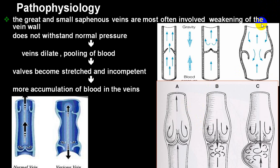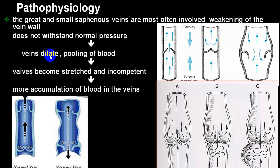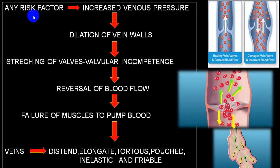Blood flows against gravity because of the pumping action of the calf muscle, ankle joint movement, and negative intrathoracic pressure. When these mechanisms fail, blood starts to pool: veins dilate, valves become stretched and incompetent, more blood accumulates in the venous system, venous pressure increases, further dilatation occurs, valvular incompetence worsens, reverse blood flow increases, muscle pump fails — resulting in distended, elongated, tortuous, friable veins leading to subcutaneous bleeding, pigmentation, and dermatitis.